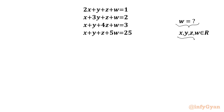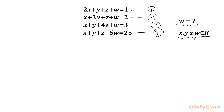Let's get started by writing equation 1, equation 2, equation 3, and equation 4. Now in the first equation we have 2x, in the second equation we have 3y, in the third equation we have 4z, and in the fourth equation we have 5w.